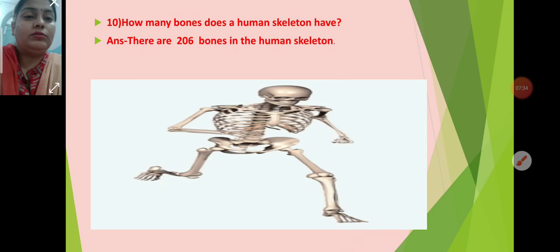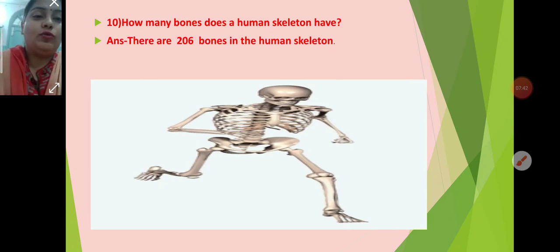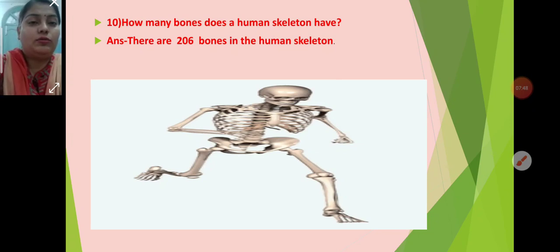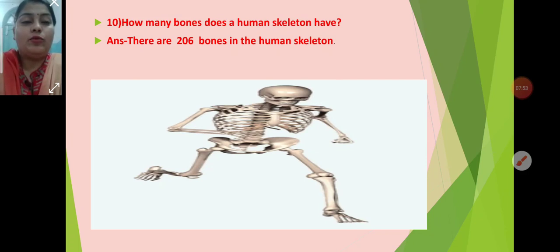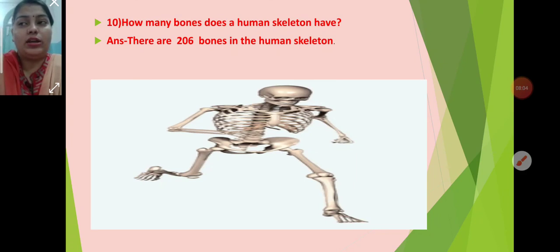How many bones does a human skeleton have? There are 206 bones in the human skeleton. The thigh bone — T-H-I-G-H — is the largest bone in your body. This is a picture of a bone. The stapes is the smallest bone in the human body.